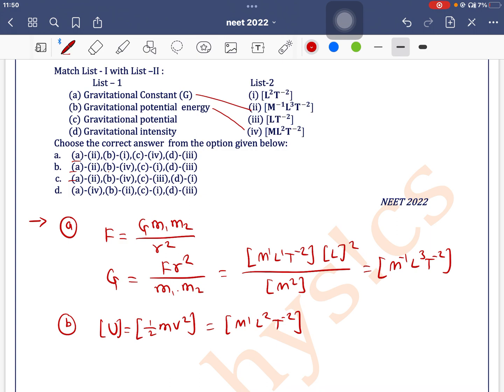b4 is in option b and option c. If you see for option number, let's try for d because gravitational intensity means acceleration due to gravity. So acceleration